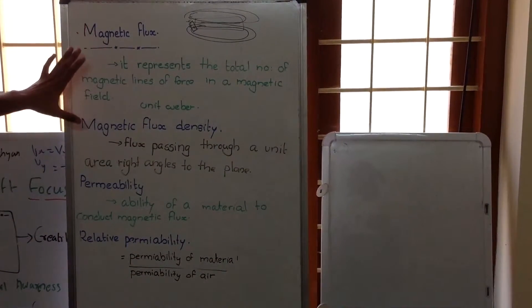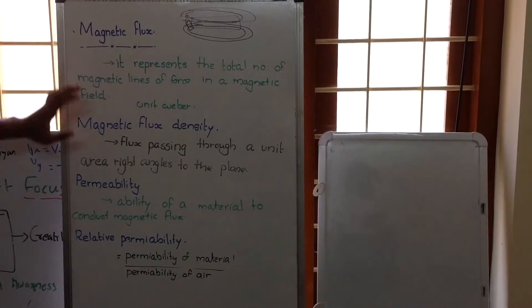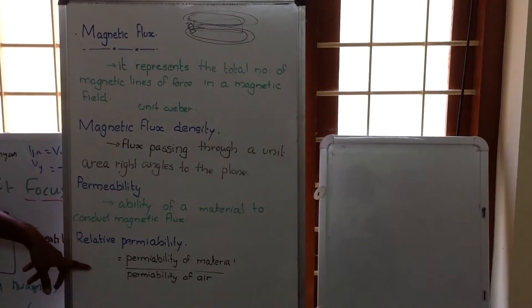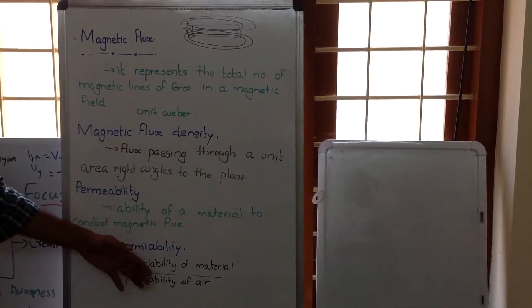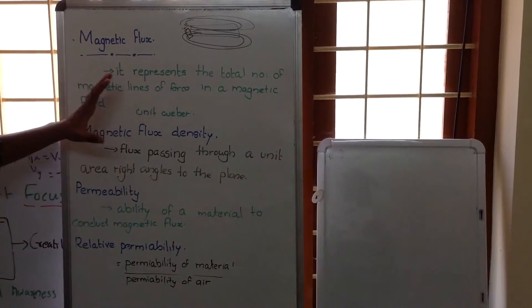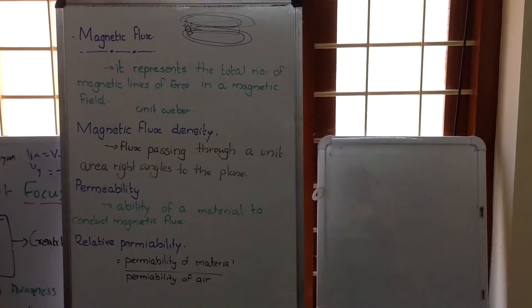We have explained some basic terms like magnetic flux, magnetic flux density, permeability, and relative permeability, which will be useful for studying MMF and some magnetic circuits. Thank you.